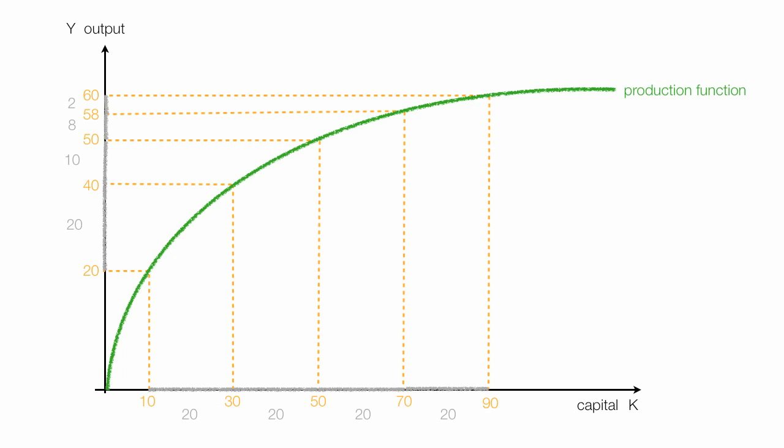Notice that the amount of output decreases even though the increase of capital is always 20. So as we increase capital, we get less and less output. This is called diminishing marginal productivity of capital.